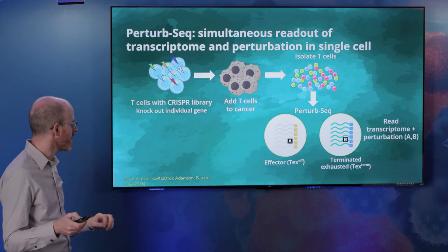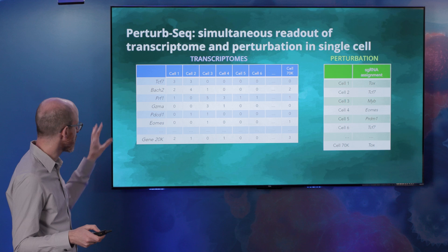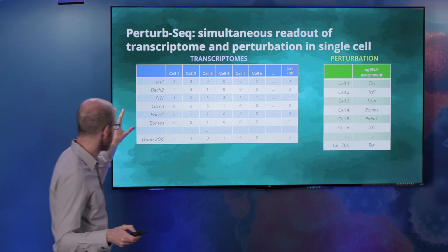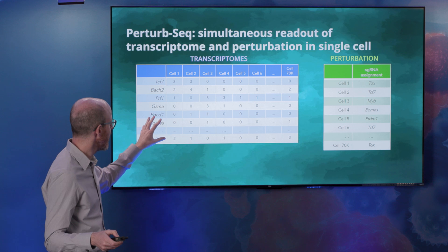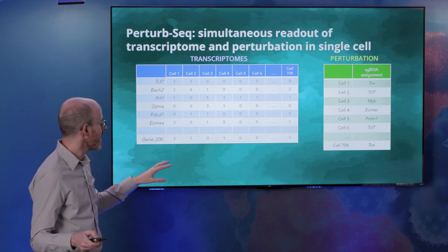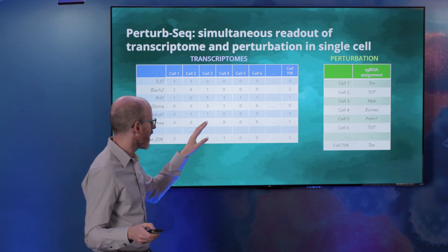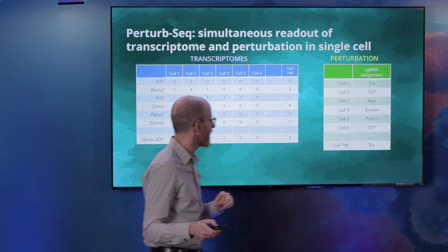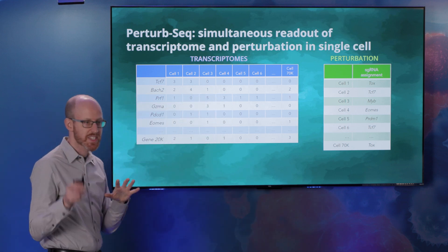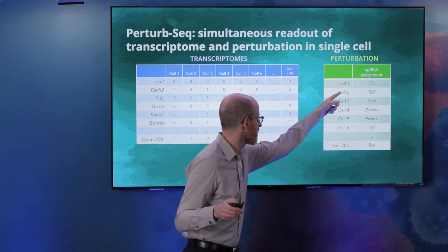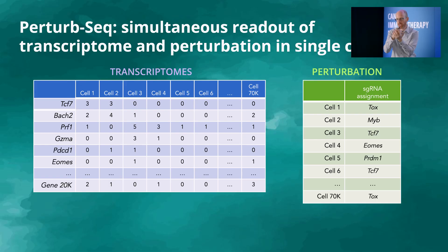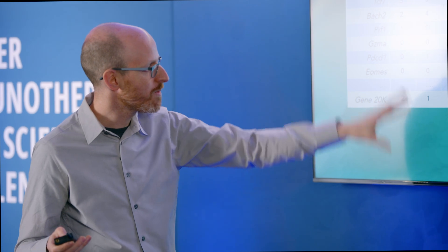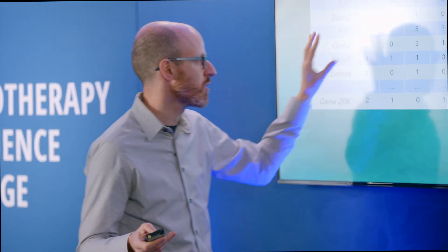The data that you'll get will be structured as follows in the challenge: you'll receive a gene expression matrix that has the expression of every single gene in every single cell. In addition, you'll see for every single cell what perturbation that cell received. For instance, cell one received the perturbation tox, meaning the tox gene was knocked out, so the tox gene expression should be reduced in that cell or at zero — and you have that information alongside the transcriptional information.